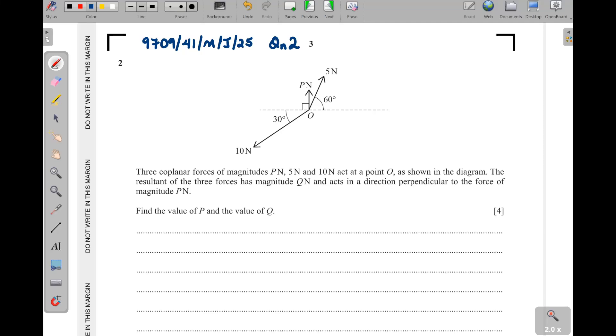Question 2 is coming from resolving of forces. They are saying three coplanar forces of magnitudes P, 5N, and 10N act at a point O as shown in the diagram. The resultant of the three forces has magnitude Q and acts in the direction perpendicular to the force of magnitude P. Now what does this one mean?